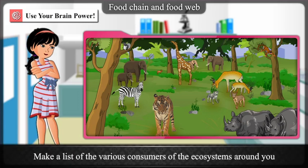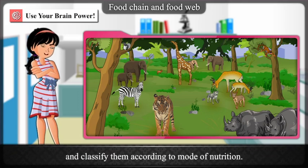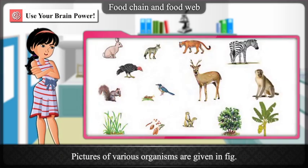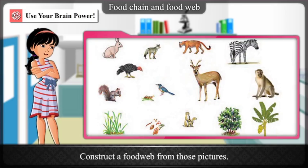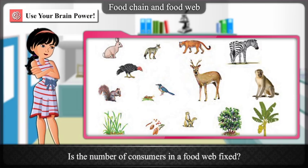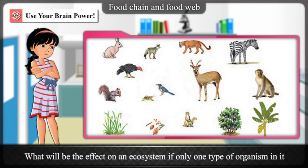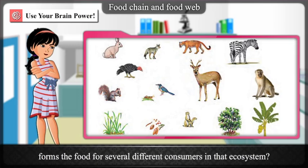Make a list of the various consumers of the ecosystems around you and classify them according to mode of nutrition. Pictures of various organisms are given in the figure — construct a food web from those pictures. Is the number of consumers in a food web fixed? What will be the effect on an ecosystem if only one type of organism forms the food for several different consumers in that ecosystem?